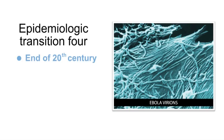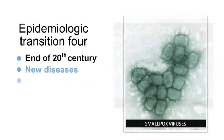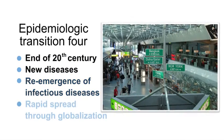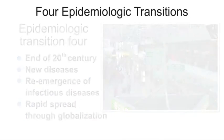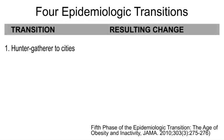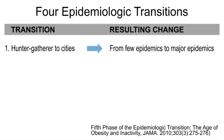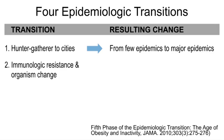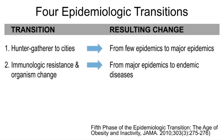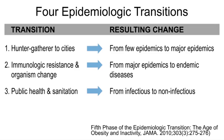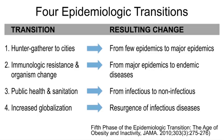The fourth transition started at the end of the 20th century, when both new diseases and the reemergence of infectious ones occurred, as well as the rapid spread of disease due to globalization. To compare the four transitions: the first started when hunter-gatherers began agriculture, transitioning from few epidemics to major epidemics. The second saw populations develop immunologic resistance, transitioning to endemic diseases. The third came from improved public health and sanitation, transitioning to non-infectious chronic and degenerative diseases. The fourth, driven by globalization, brought a resurgence and rapid spread of infectious diseases.